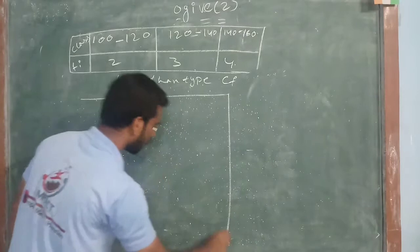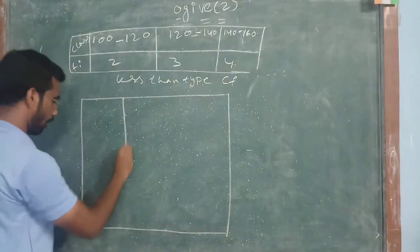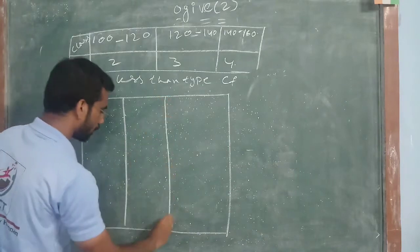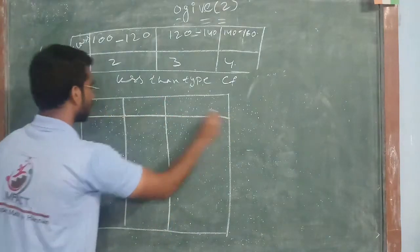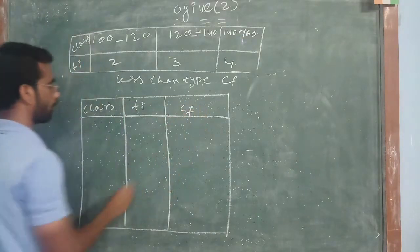So, we should make a box table, in this table 1, 2 and 3 columns. Now, this one will be the class, this is FI and this is CF.